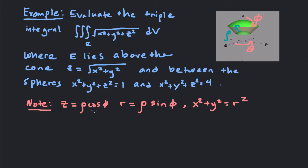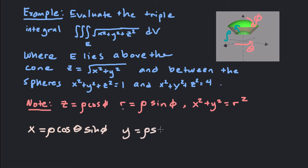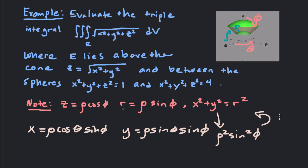Let's see how this happens. A few things to note: z is equal to rho cosine phi, and R from cylindrical coordinates is equal to rho sine phi, and R squared equals x squared plus y squared. That happens because x equals rho cosine theta sine phi, and y equals rho sine theta sine phi. When you square those and add them together, you factor out rho squared sine squared phi, and you get rho squared sine squared phi times cosine squared theta plus sine squared theta, which is just 1. So R squared equals rho squared sine squared phi, which tells us R equals rho sine phi.